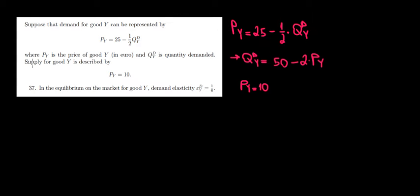Let's solve question 37 now. What we have here is demand for good Y represented by this function. So we have the price of Y, the quantity demanded. The supply is given as this fixed price, so the price of Y is sold at 10 euros. Now in the equilibrium, the demand elasticity will be the following. Is this true or false?